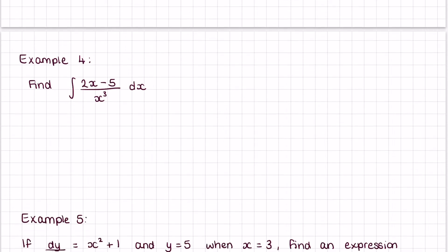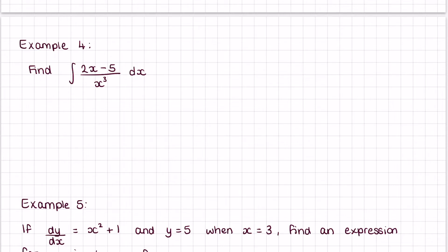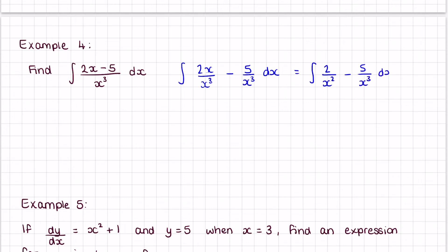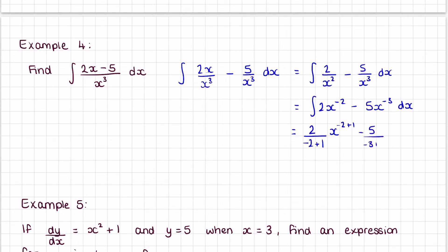Example 4: find the integral of (2x − 5) over x³ dx. Similar to when we do derivatives, we want to separate our fraction. This gives the integral of (2x/x³ − 5/x³) dx, which simplifies to the integral of (2/x² − 5/x³) dx, and rewriting with negative exponents: the integral of (2x^(-2) − 5x^(-3)) dx. Applying the rule: 2 over (-2+1) times x^(-2+1), minus 5 over (-3+1) times x^(-3+1), plus c.